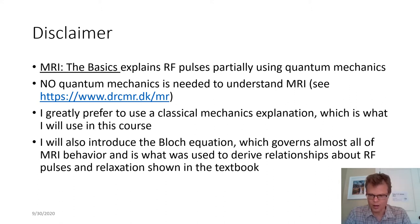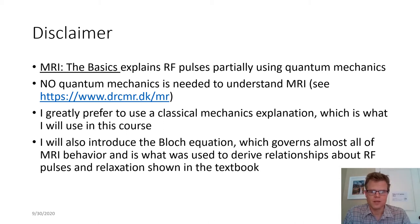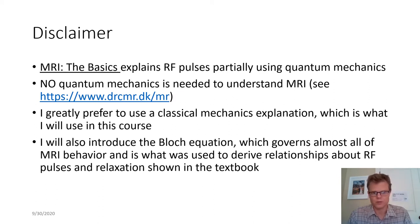Just be aware I won't cover things in the same way they are mentioned in the book. I'm also going to add the Bloch equation, which is really the fundamental relationship that governs almost all of MRI behavior. The derivations are not shown in the textbook, but these are the derivations used to derive all the RF pulse relationships and the relaxation relationships. It's really a first-principles equation for MRI.